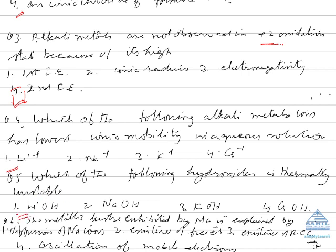Question 6: The metallic luster exhibited by sodium is explained by the oscillation of mobile electrons. Sodium has very low ionization energy, so when visible light falls on it, the valence electrons get delocalized over the whole lattice. Due to the oscillation of these electrons, metallic luster is produced. Diffusion of sodium ions and existence of free electrons or body-centered cubic structure are incorrect reasons. The correct answer is oscillation of mobile electrons.